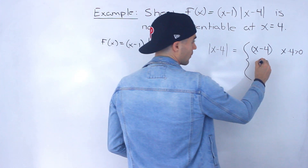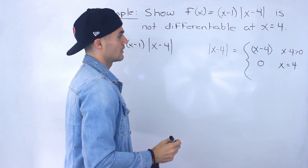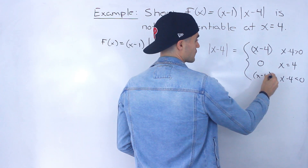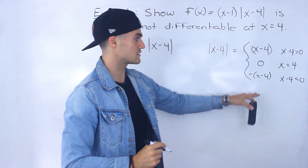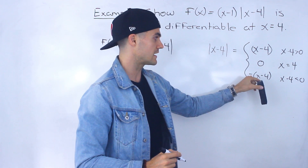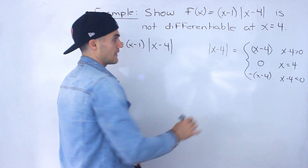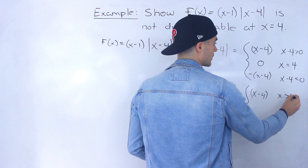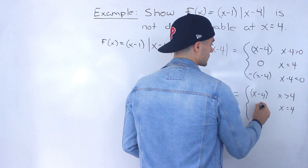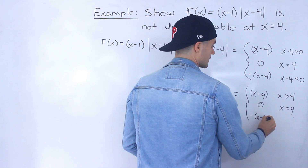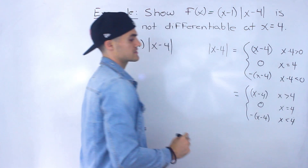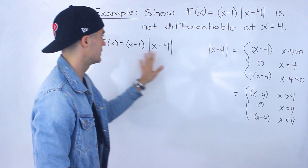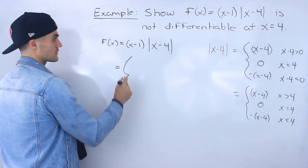If x equals 4, then x minus 4 equals 0. And if x minus 4 is less than 0, we multiply that expression by negative 1 to make it positive. So we can write: the absolute value of x minus 4 equals x minus 4 when x is greater than 4, equals 0 when x equals 4, and equals negative (x minus 4) when x is less than 4. We can use this to create a piecewise function for the overall expression.